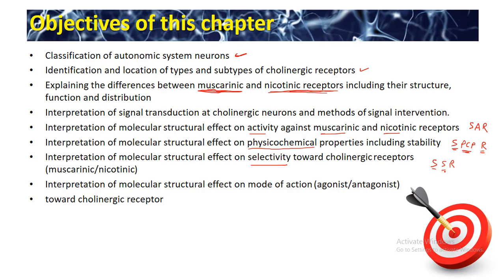We are also going to interpret the effect of changes in molecular structure on the selectivity of the compound toward cholinergic receptor types — the muscarinic and nicotinic receptors — which is called structural selectivity relationship. These abbreviations are used internally in this section. The other part of this section will include interpretation of microstructure effects on mode of action, as changes in molecular structure will produce changes in the mode of action of the compounds. We can change a compound from agonist to antagonist by changing the structural features of the molecule — this is called structural mode of action relationship.